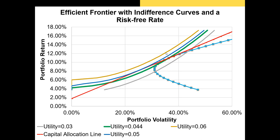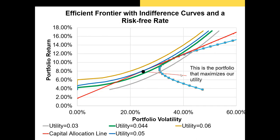Next, we'll already know our utility function, so what we're going to do is plot our indifference curves and identify the maximum utility we can reach. In this case, it looks like the blue line corresponds to the indifference curve with utility of 0.05. This point on our capital allocation line that is tangential to this blue indifference curve represents the portfolio combination that maximizes our utility. We're investing a portion of our assets in the risk-free asset and a portion in the risky portfolio, which will contain different risky assets with specific weights assigned to each.